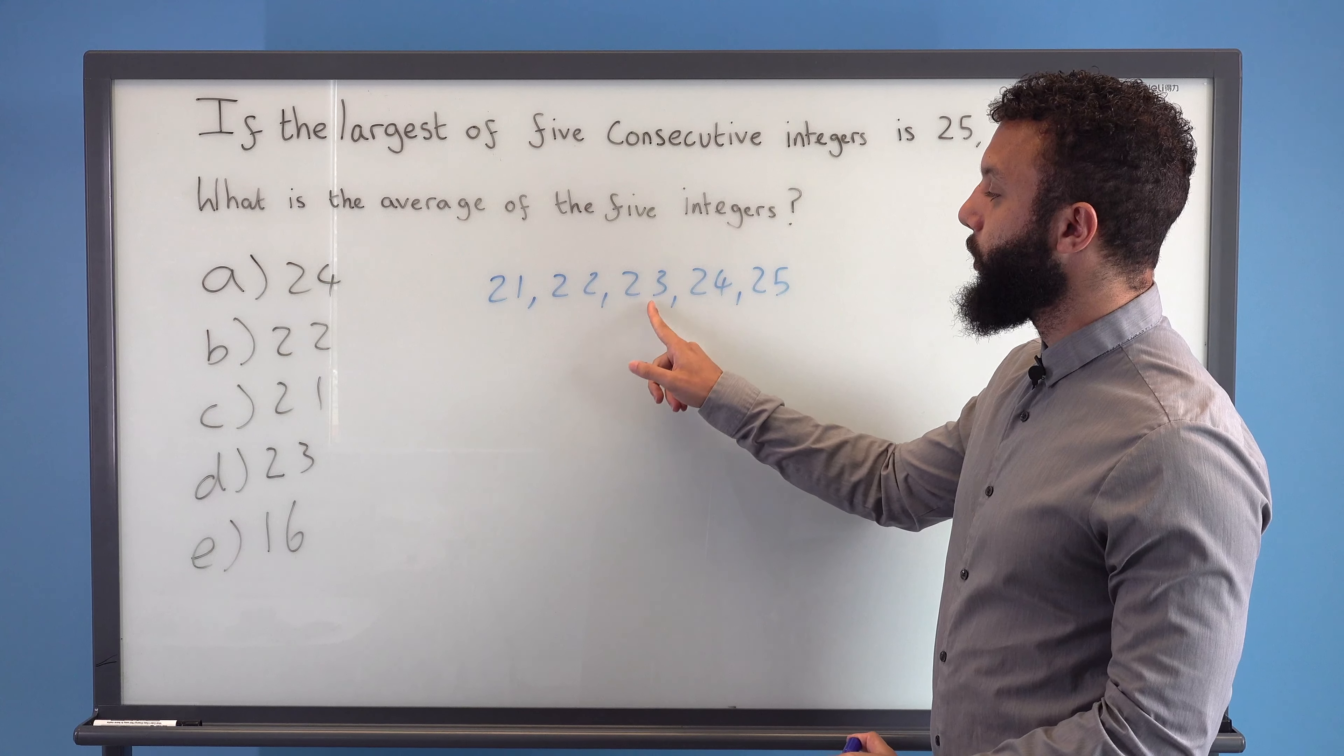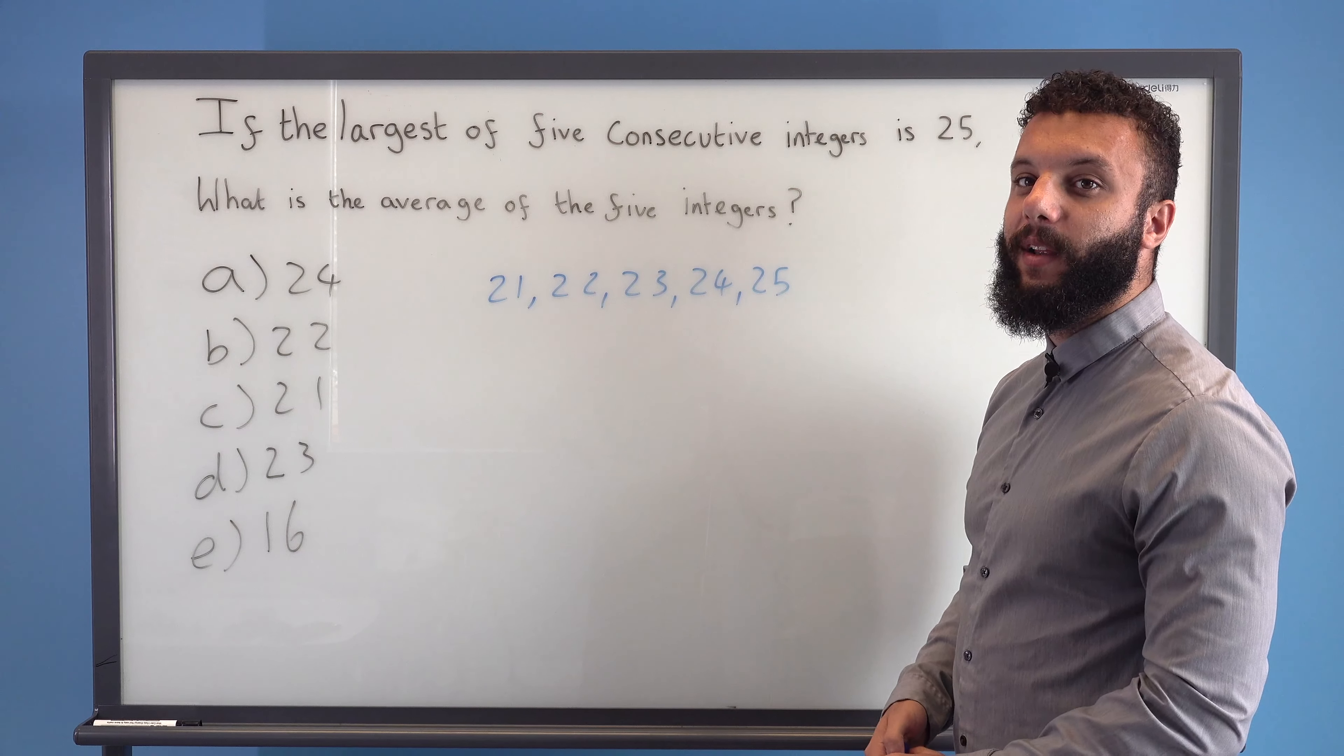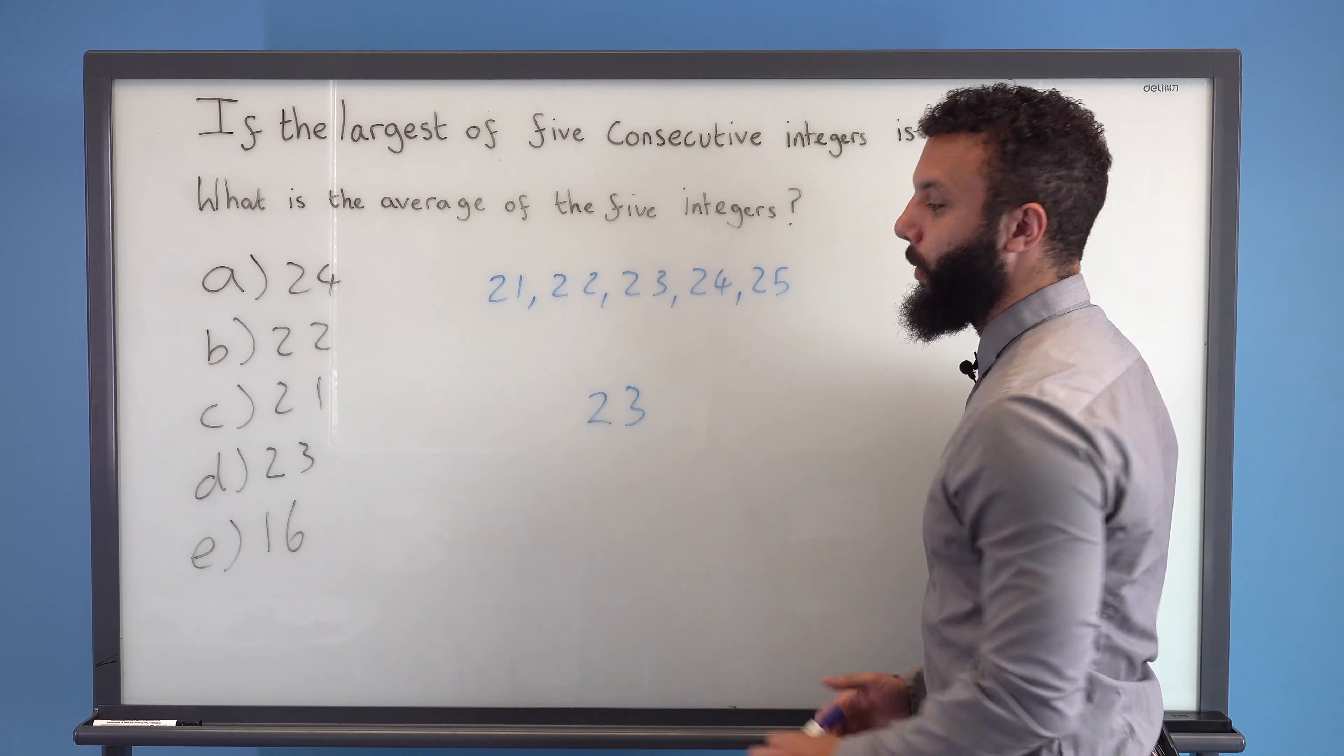which leaves 23 in the middle to also be the average and it's going to be zero away from the average, meaning the average in this question is 23, which is D.